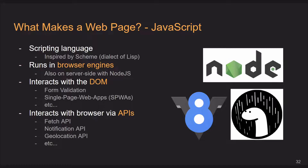Next, we have JavaScript. It's a scripting language — if you didn't know, inspired by Scheme, which is a dialect of Lisp. It is designed to run in browser engines like Chrome's V8, but it also runs on the server side with Node.js and Deno — both are essentially just Chrome's V8 pulled out of the browser, such that you can now run JavaScript on the command line or server side. JavaScript was designed to interact with the DOM and interact with the browser via APIs — that's its primary goal.